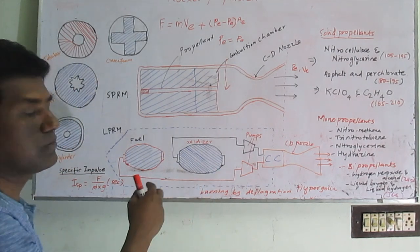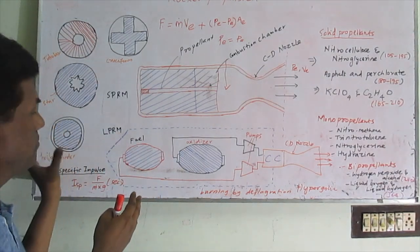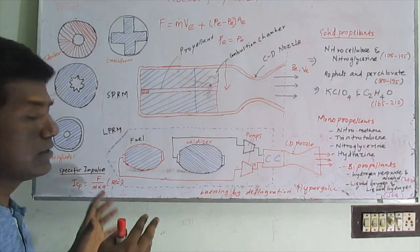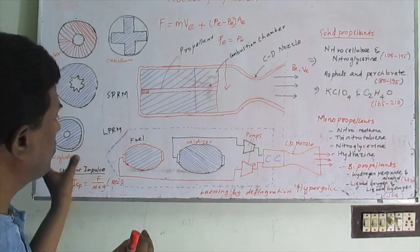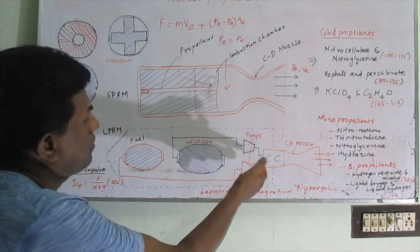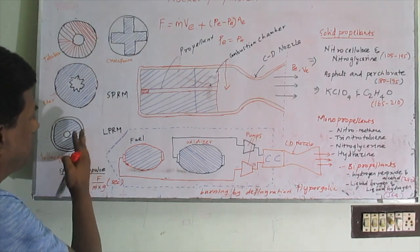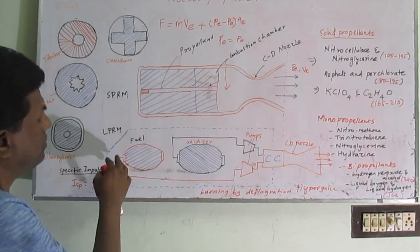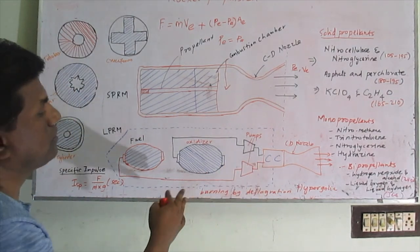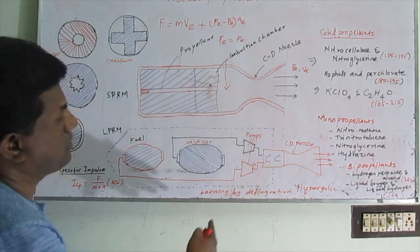In the pressure feed system, high-pressure inert gases are stored separately in pressurized tanks. The inert gas is supplied to the fuel and oxidizer tanks, pushing the propellants in the correct proportion and sufficient quantity to the combustion chamber.